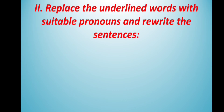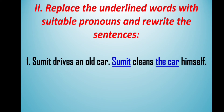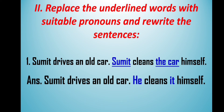Your next question is: replace the underlined words with suitable pronouns and rewrite the sentences. The first sentence is: 'Sumit drives an old car. Sumit cleans the car himself.' The underlined words are 'Sumit' and 'the car.' Sumit is a noun and he is a boy, so we use 'he' for Sumit. The car is an object, so we use 'it.' The answer is: 'Sumit drives an old car. He cleans it himself.'